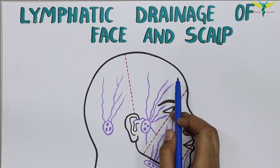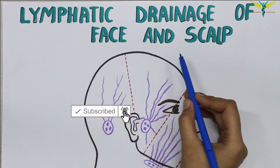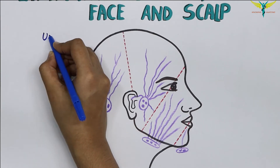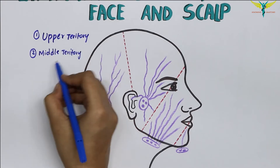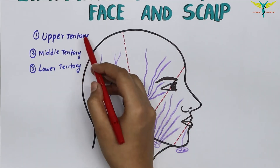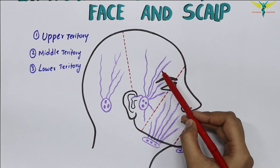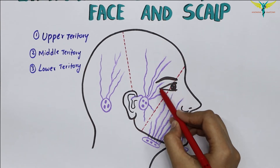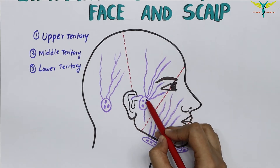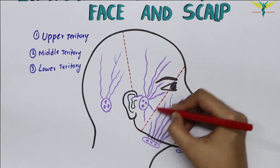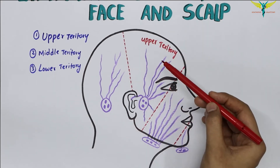In this video, let's learn about the lymphatic drainage of the face and the scalp. The face is divided into three lymphatic territories: the upper territory, middle territory, and lower territory. The upper territory comprises a greater part of the forehead, the lateral half of the eyelids including the conjunctiva, the parotid area, and the adjoining part of the cheek.